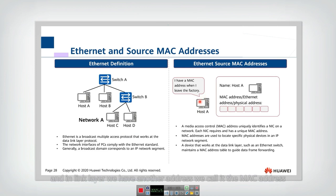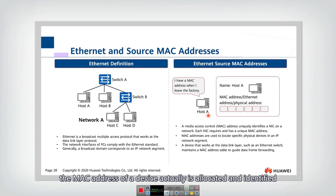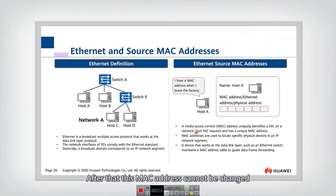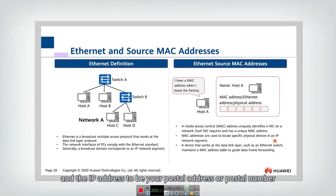Every node has not only an IP address — the IP address is allocated from the network layer — but in the link layer we have another address called the MAC address, the media access control address. The MAC address cannot be changed for a device; it is allocated and identified when the network interface card or device is manufactured. In contrast, the IP address can be changed depending on which network you are in. You can think of the MAC address as your ID number and the IP address as your postal address.